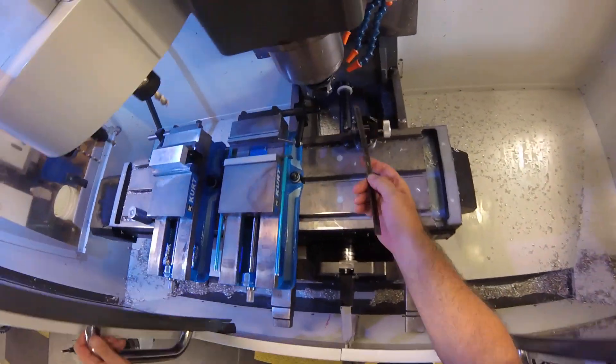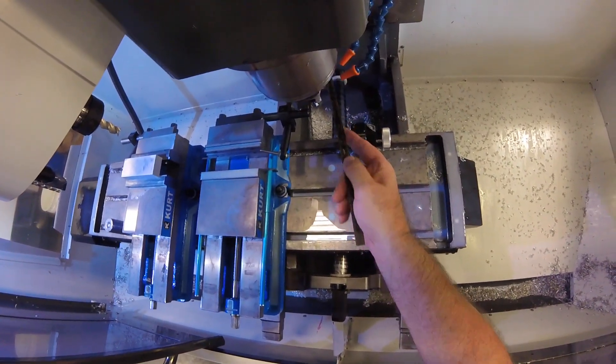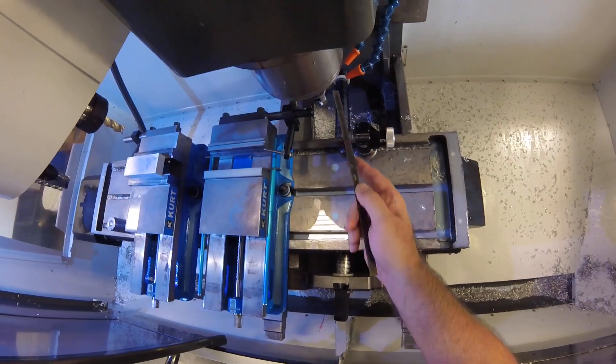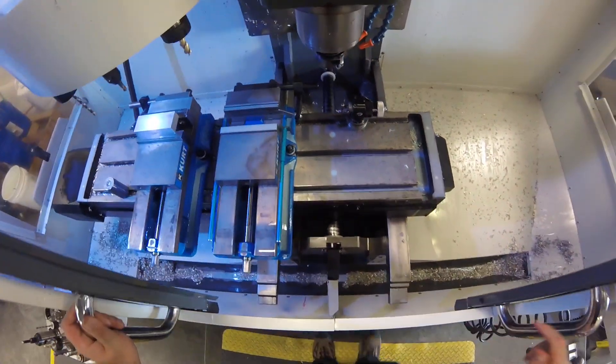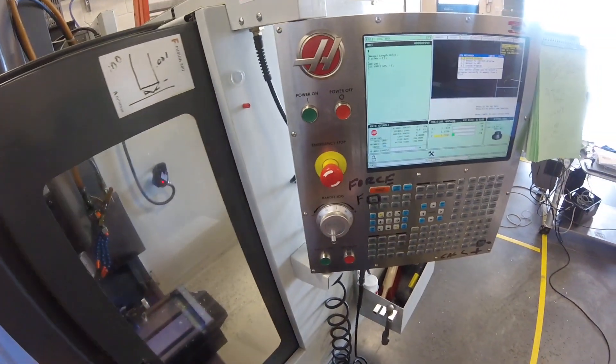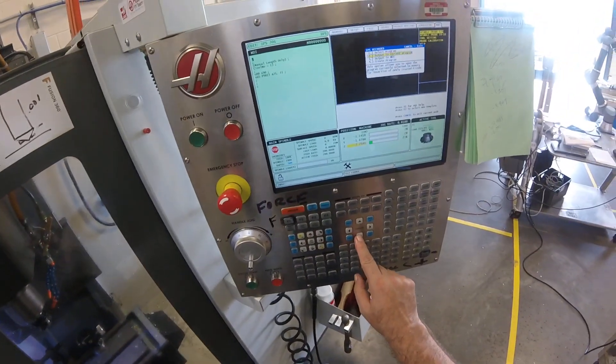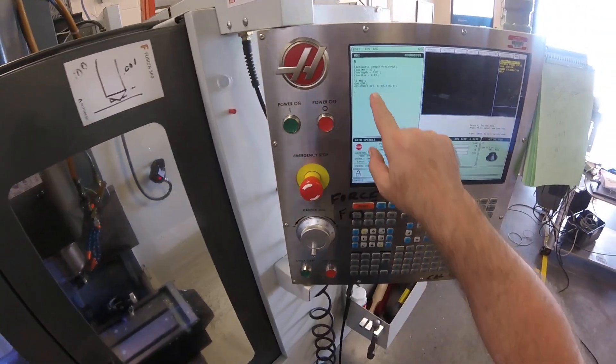Because what it will try to do is try to hit the edge of this, not the bottom of that. It will give you a bad number of depth. I'm going to finish the programming with output to MDI, review automatic length rotating, and then we're going to do MDI, and then we're going to do cycle start.